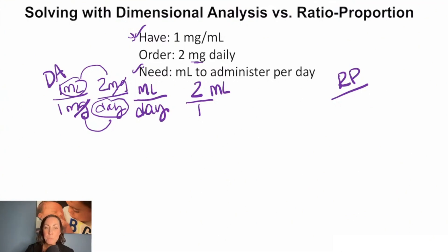So for this to set up with ratio proportion, as we read this, we can say that one milligram equals one mL, right? Because that's our volume. We know that that's the amount in one mL. So that's our relationship, one milligram over one mL.